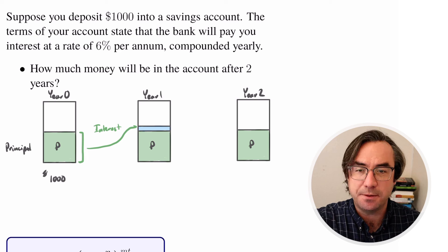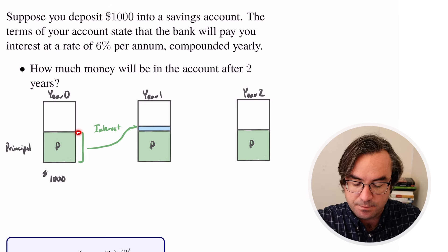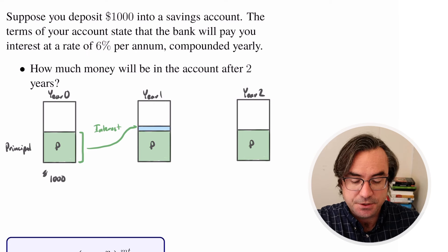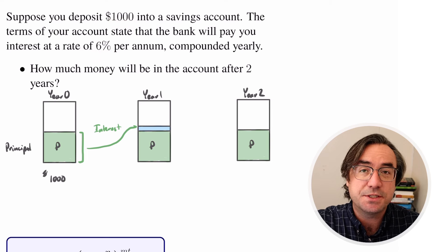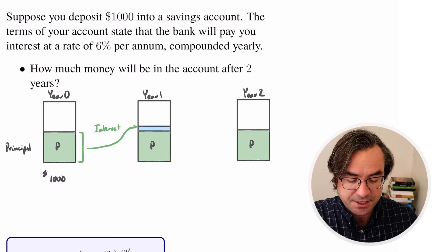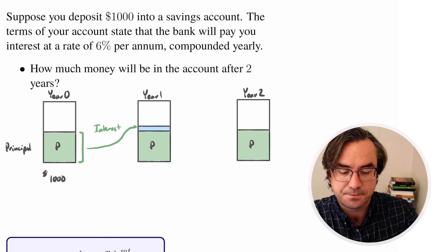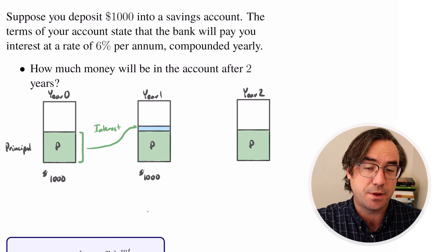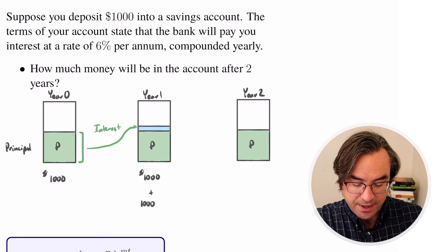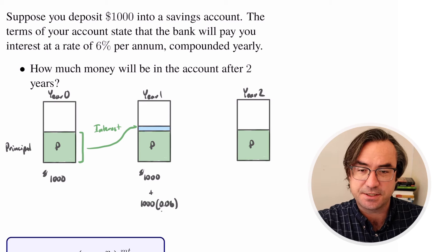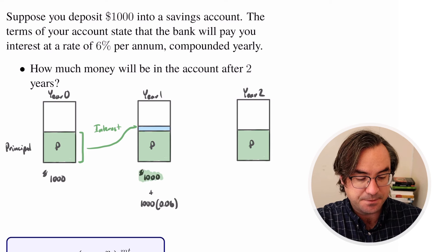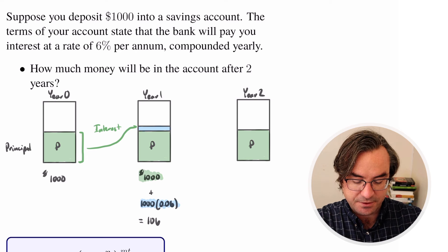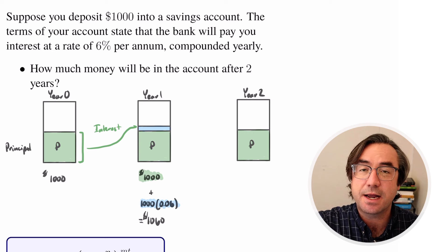To figure out how much that interest payment is, we take our balance — the amount earning interest for that year — and multiply it by 6%. So 1,000 times 0.06 gives us $60. The way we calculate this is: we have our balance from the previous year, $1,000, and we add 1,000 times 0.06. That previous year's balance plus the interest payment gives us $1,060. So that's how much money will be in our account after year one.